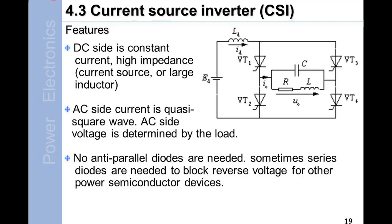Section 4.3: Current Source Inverter (CSI). Features: DC side is constant current, high impedance current source or large inductor. AC side current is quasi-square wave. AC side voltage is determined by the load.